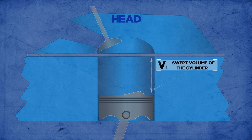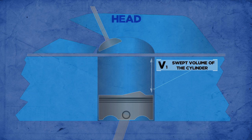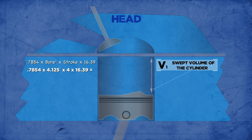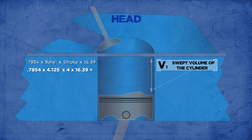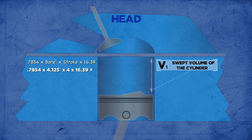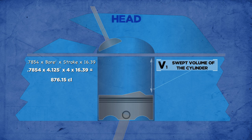We'll start with the cylinder volume at BDC. Since we know the bore is 4.125 and the stroke is 4 inch, we just plug them into the equation for the volume of the cylinder: 0.7854 times bore squared times the stroke times 16.39. This equation converts the result from cubic inches to cubic centiliters. We do this because our equipment is designed to measure in metric volumes. Our result is 876.15 centiliters.